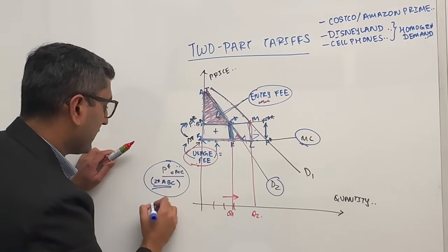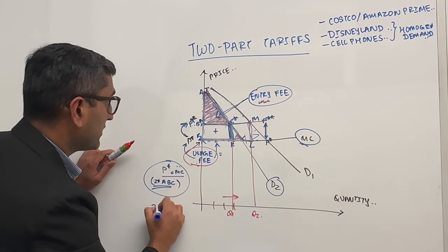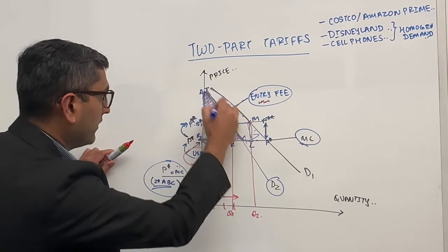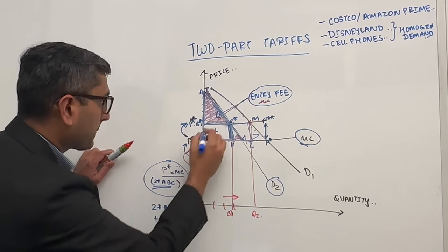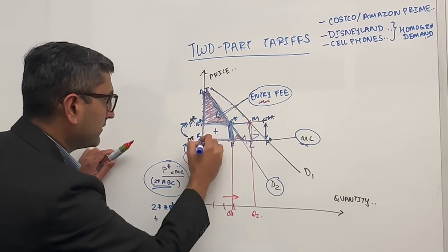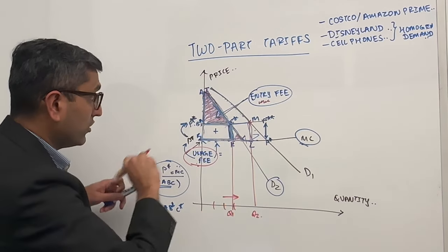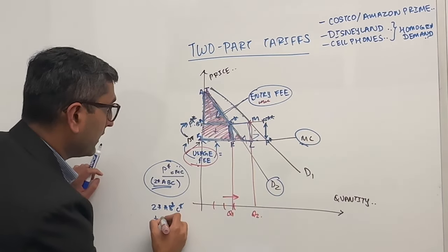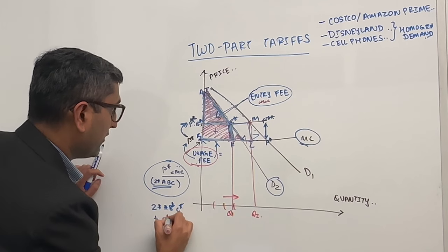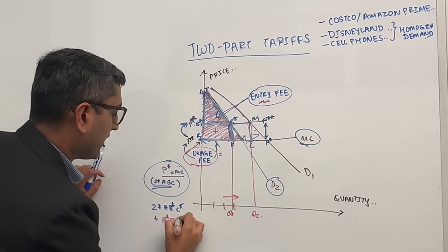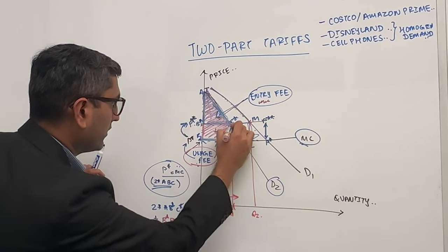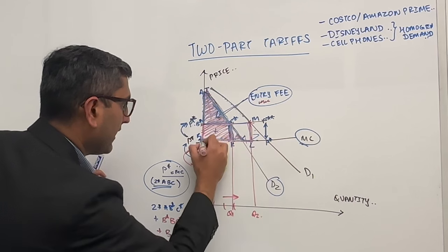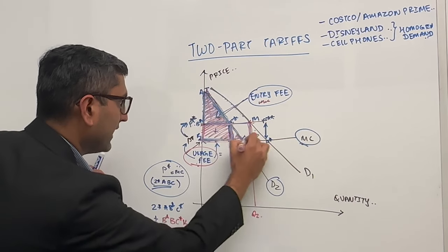So now instead of this, we get two times A B star C star, which is this one, plus this rectangle because that's your new producer surplus for the usage fee. That would be area B star B C star K, which is this one, plus B star M L and B. So we can also get this one.